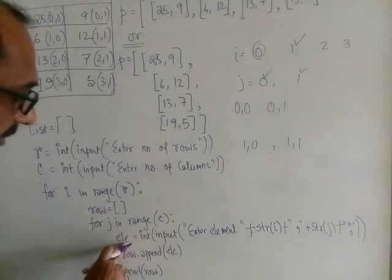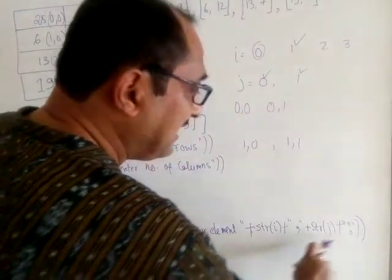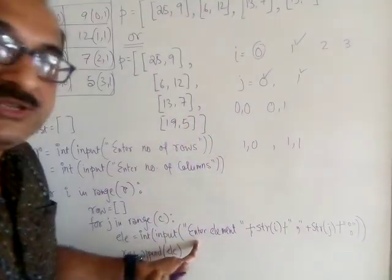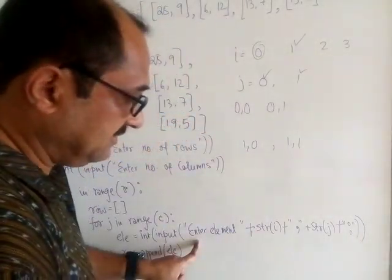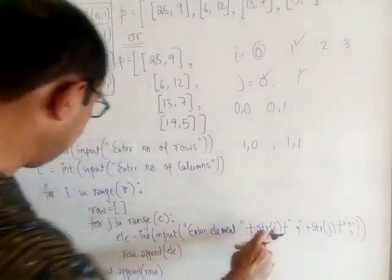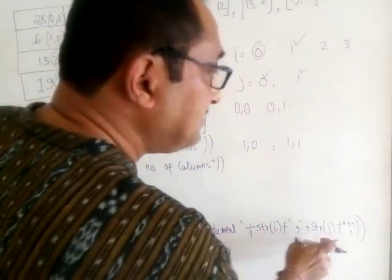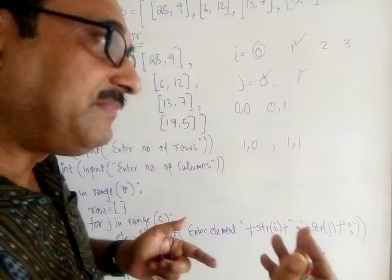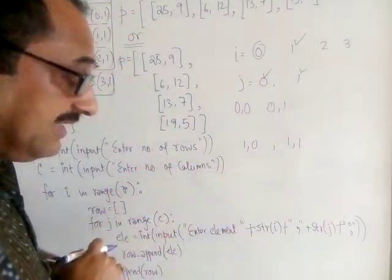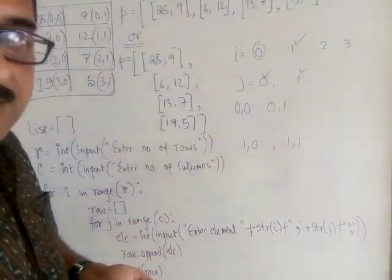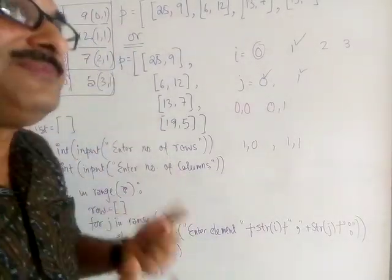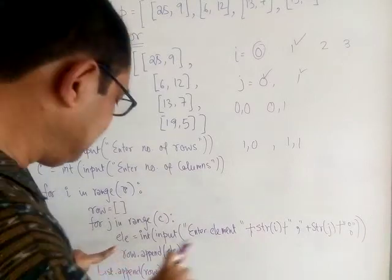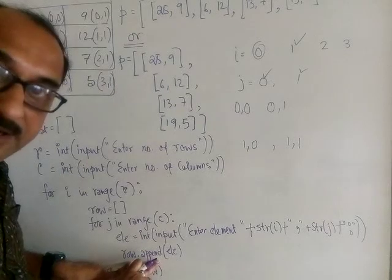For the input prompt, I join strings using concatenation with `+` to display the current position. So at any given time, say i equals zero and j equals one, the prompt shows that position so the user knows exactly which element they are entering. This guides the user properly — if they have a diagram showing the array, they won't get confused about which element they're entering at each step.